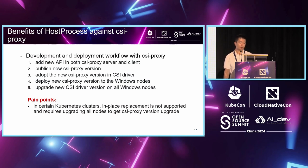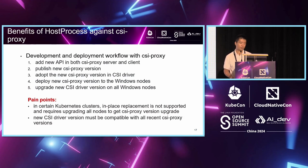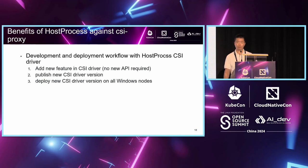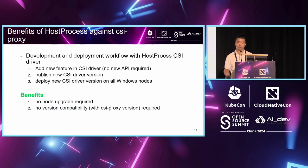There are a few pain points. In certain Kubernetes clusters, in-place replacement is not supported, requiring upgrading all Windows nodes to get the CSI proxy version upgrade. Also, a new CSI driver version must be compatible with all recent CSI proxy versions, so you need to test all kinds of version combinations. With the host process container CSI driver, if you want to add a new feature, there's no new RPC required — you just add the feature into the CSI driver directly, then publish the new version and deploy it to Windows nodes. No node upgrade required and no version compatibility issues, because there's no CSI proxy anymore.